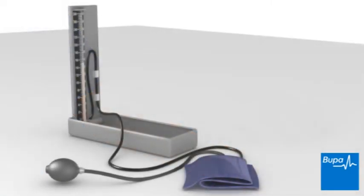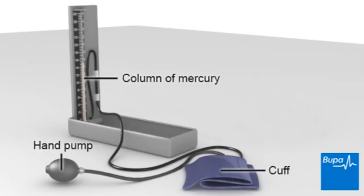You may have your blood pressure taken with a sphygmomanometer. Here we show a sphygmomanometer. This has a cuff with two tubes coming off it. One of these tubes is attached to a hand pump and the other is connected to a column of mercury.